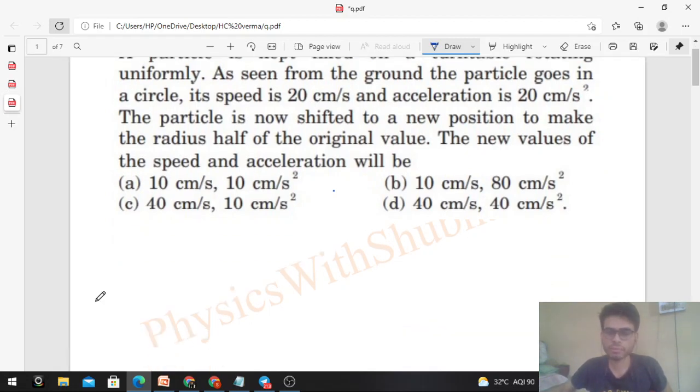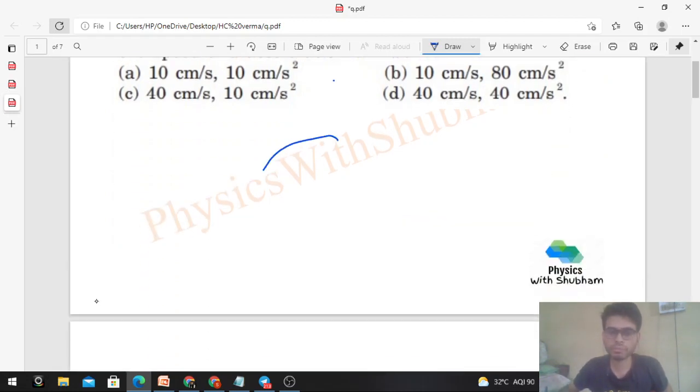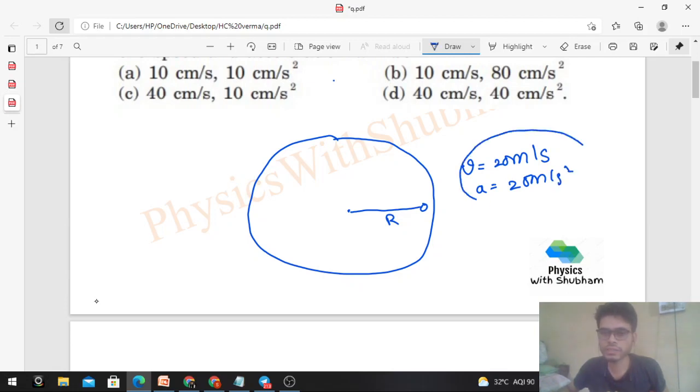The new values of the speed and acceleration will be... So this is a turntable. You have a particle which is at a distance r initially. Its initial velocity was given as 20 cm/s and initial acceleration, all these linear parameters are given like 20 cm/s². So it is velocity and acceleration when the particle is at a distance r. Now you want to make this radius half, you go r by 2, then what will be the value of velocity and acceleration?